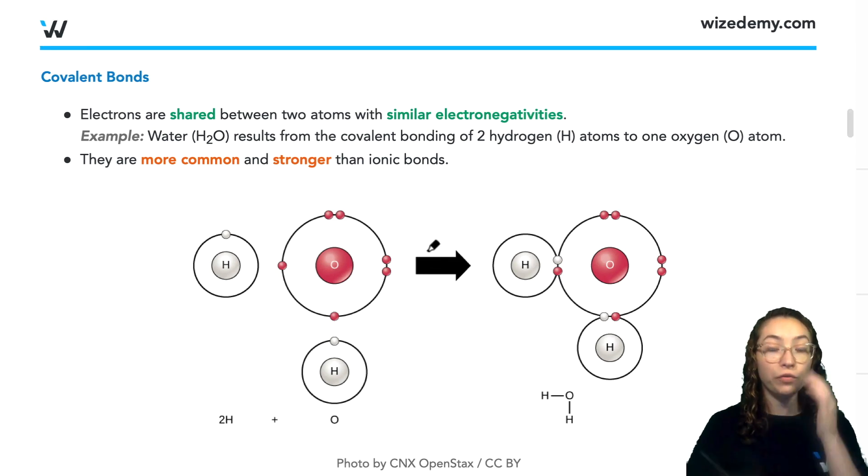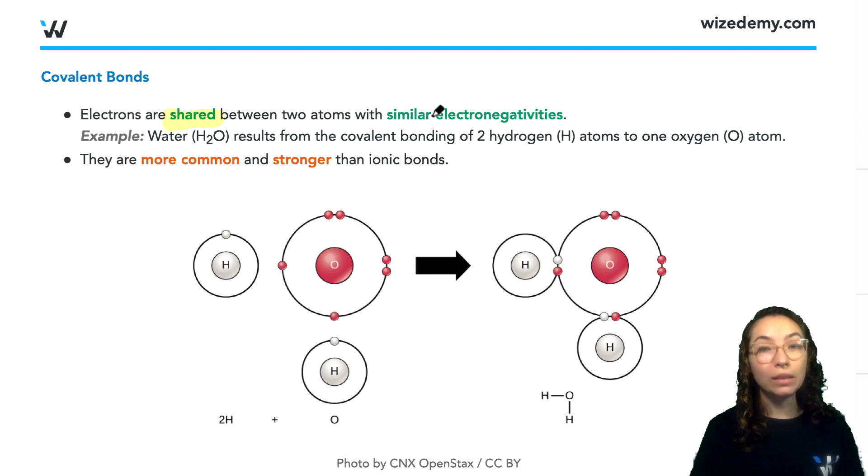Now covalent bonds are the first type of bonds that we'll discuss. In this case, this is when electrons are actually shared between two atoms or two elements of the periodic table because they have similar electronegativity. So they're never exactly the same, but they can be pretty similar so that the electrons are actually just shared between the two.